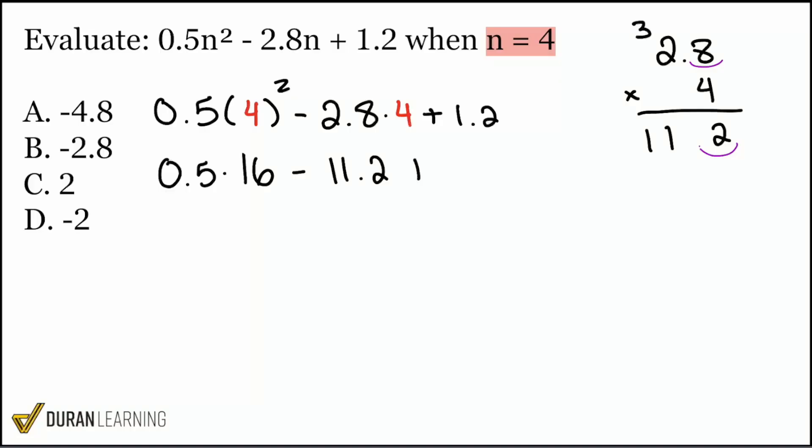Next up, we have plus 1.2 right over here. And now let's take care of this. 0.5 multiplied by 16 is the same as saying half of 16. Everyone help me out. What is half of 16? Yeah, half of 16 is just going to be 8. So this is where, again, knowing what decimals mean can save you a little bit of time. So then we have 8 minus 11.2 plus 1.2.